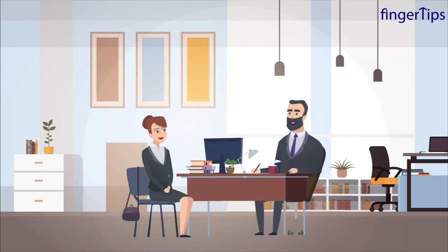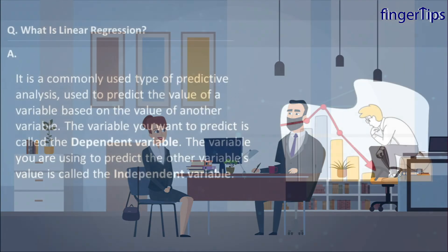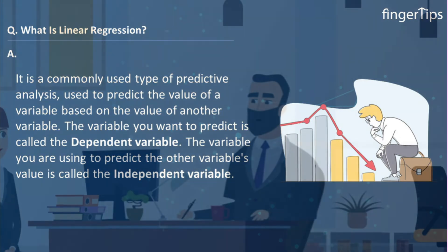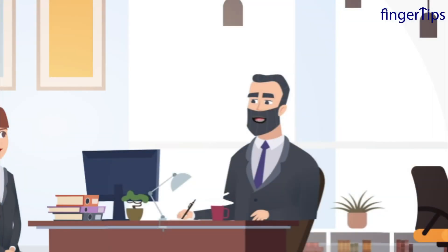What is linear regression? Linear regression is a basic and commonly used type of predictive analysis. It is used to predict the value of a variable based on the value of another variable. The variable you want to predict is called the dependent variable, and the variable you are using to predict the other variable's value is called the independent variable.